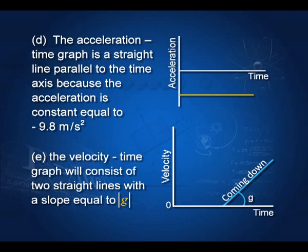The acceleration is constant at −g throughout. The velocity first decreases from 30 m/s to 0, then increases back to 30 m/s (magnitude) on the way down, as required by conservation of energy — it returns with the same speed at which it was launched.